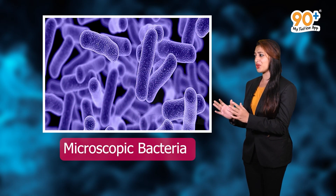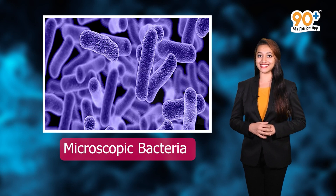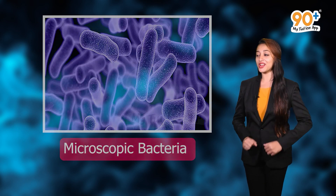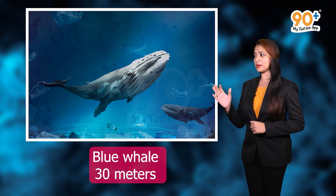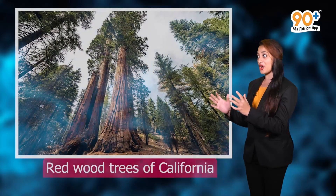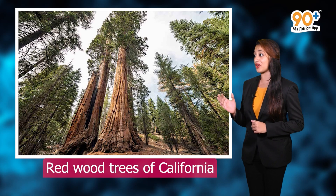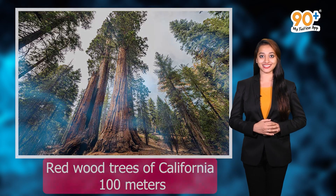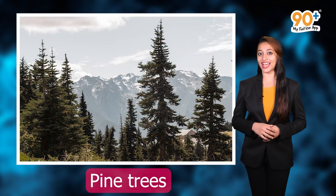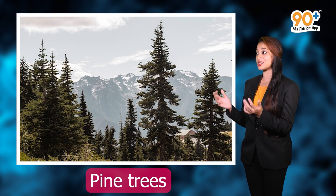Our earth is so beautiful and fascinating. We know that different forms of life occur on earth, which defines the richness of diversity of our living world. On one hand we have microscopic bacteria of a few micrometers in size, while on the other hand we have the blue whale of 30 meters in size, and also the redwood trees of California of approximate size of hundred meters.